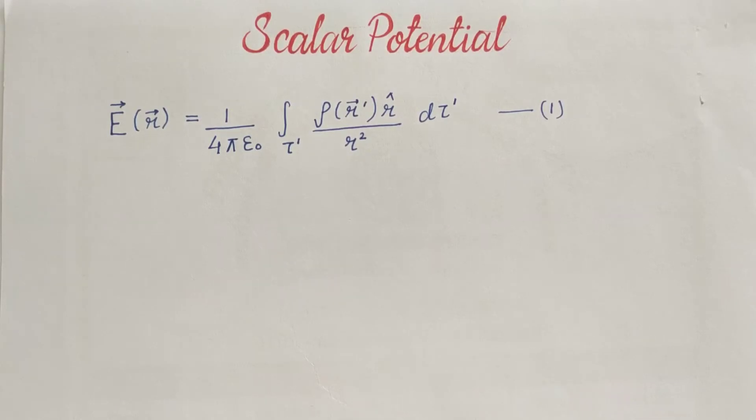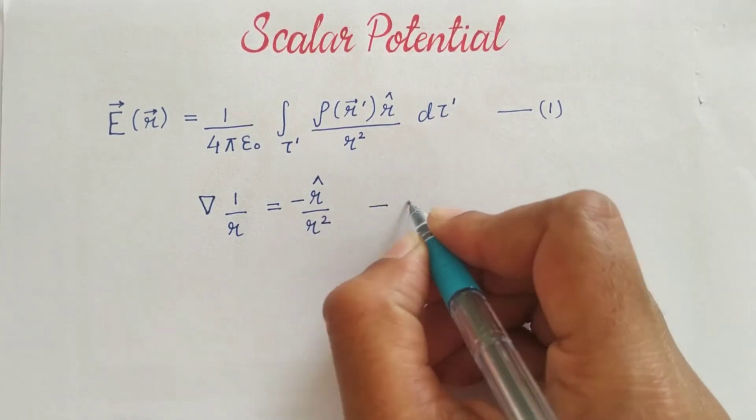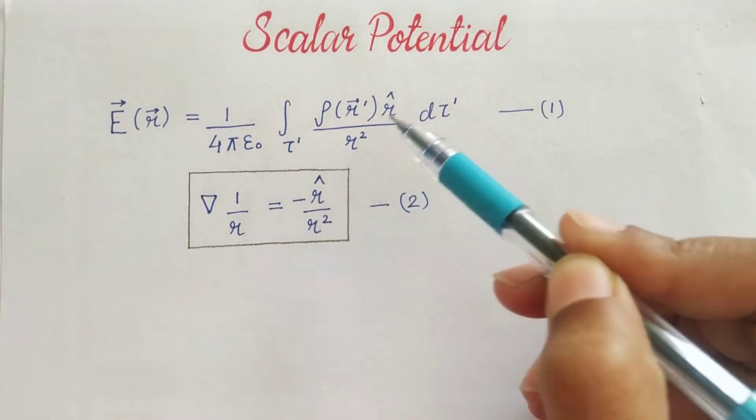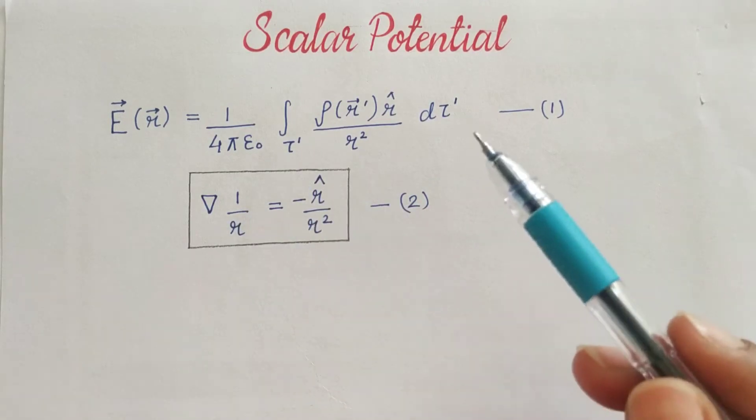Another thing is the gradient of 1 upon R. You can see that R cap upon R square has the same value as the gradient of 1 upon R, so we can replace it.